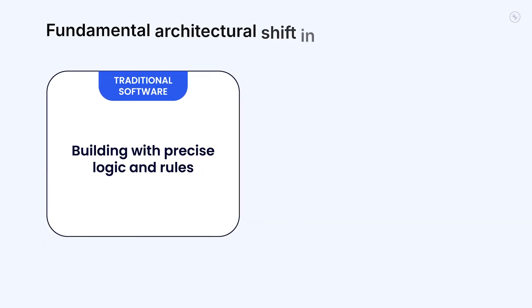Here's the catch. Today's architectures weren't designed for AI that thinks and acts in real time. Traditional software systems were built on clear separation, where data was on one side and processing was on the other. But with AI, that model breaks down.